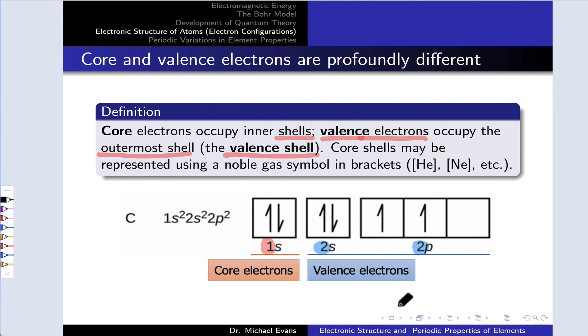Because the core electrons are not that important, we often package them up in the corresponding noble or inert gas configuration. Helium in square brackets, neon in square brackets, etc. So for example, carbon has the configuration 1s2, 2s2, 2p2.